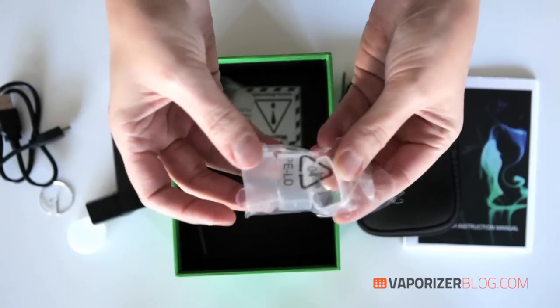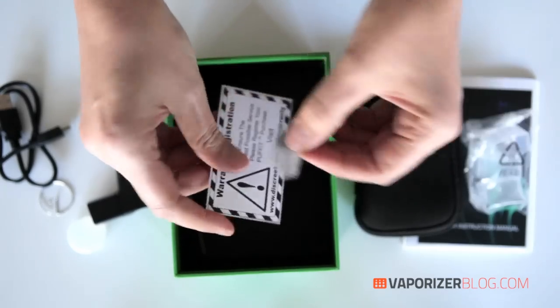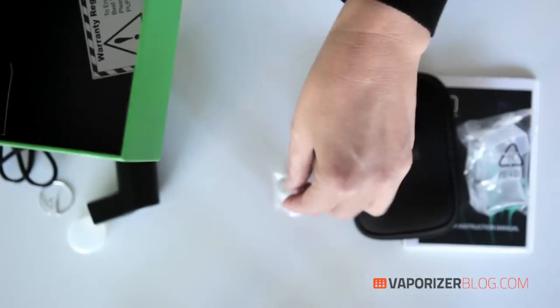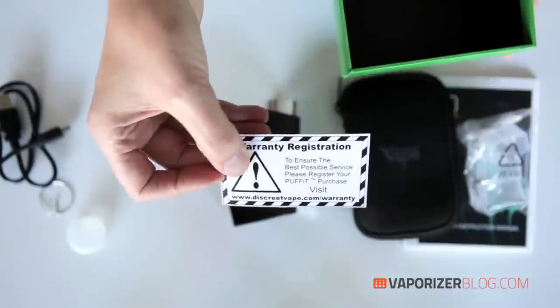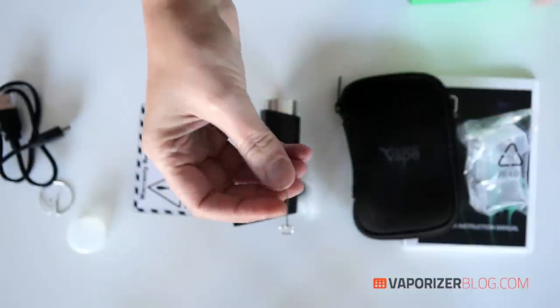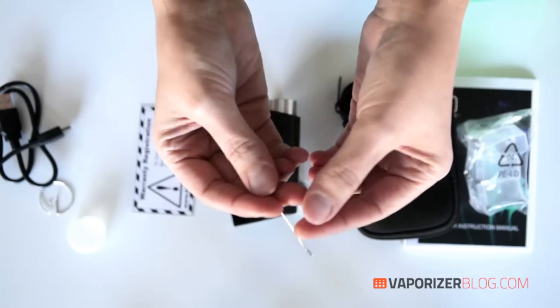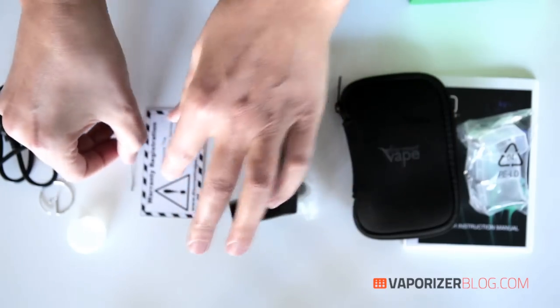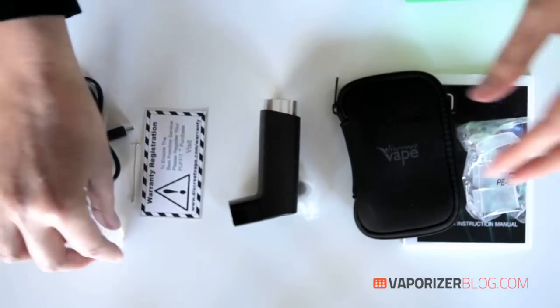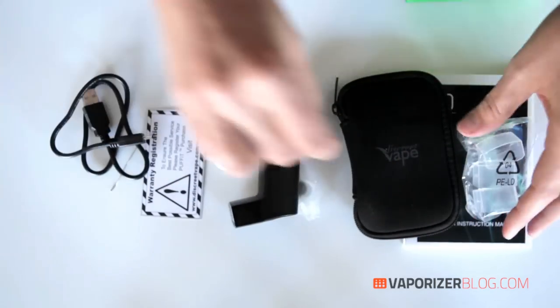Three more mouthpieces, four little extra screens, a warranty, a small little packing tool that can also be used as a stir tool as well I guess. And this, this is what you get when you order the Puffet.